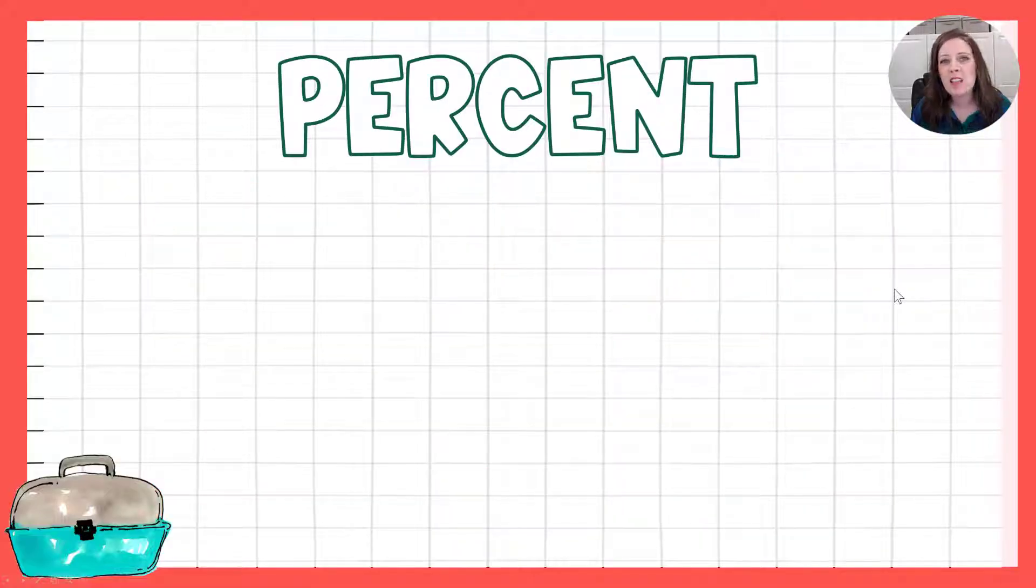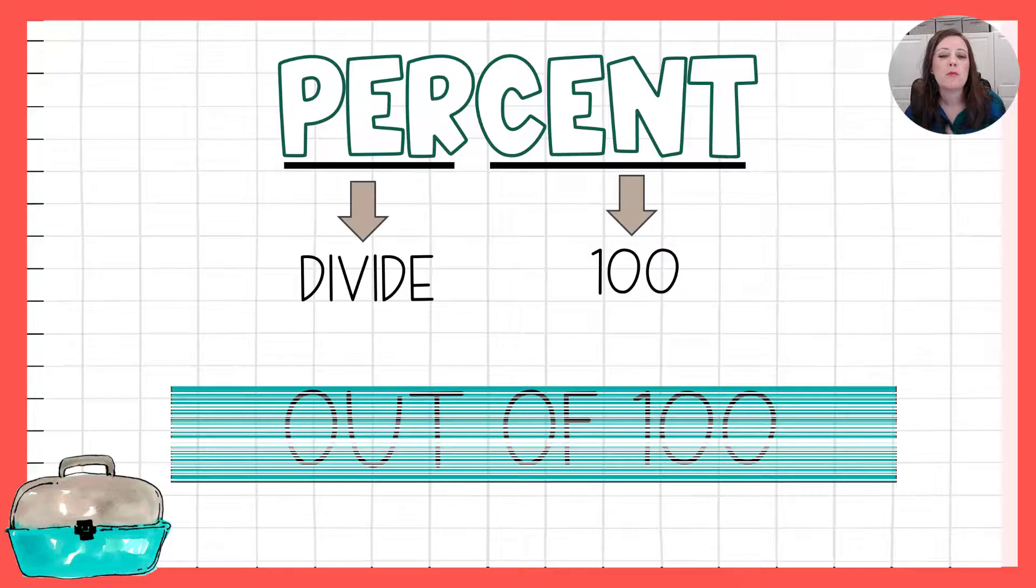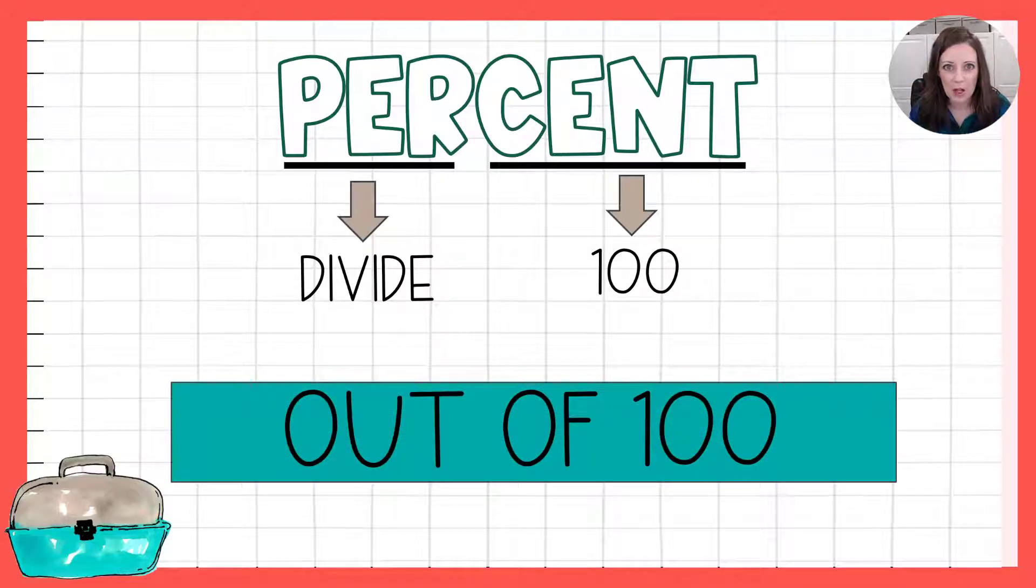What does percent mean? Let's take a second and break this word apart. We have per which means to divide and then we have cent which maybe you've heard of that: century or cent like as in money that means 100. So the word percent means out of 100, to divide by 100, which you learned in our recent activity of converting between fractions, decimals and percents.